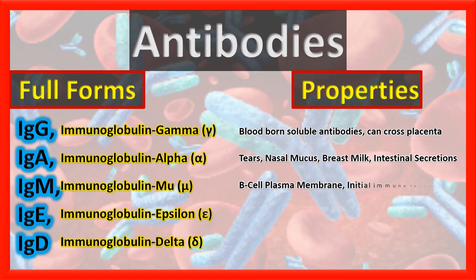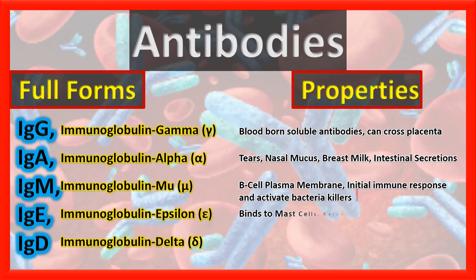IgM is present in the plasma membrane of B cells. It can initiate the immune response and also can activate bacteria-killing complements in the body. IgE binds to mast cells and releases histamine for allergic responses or reactions.